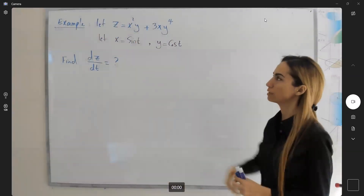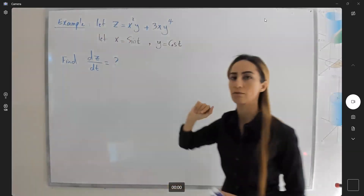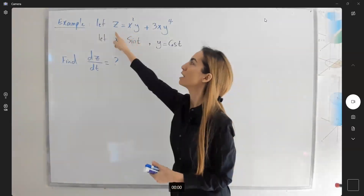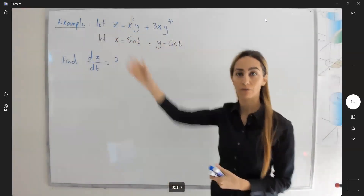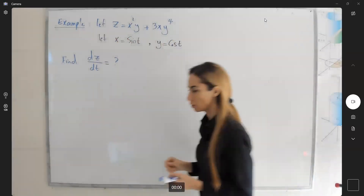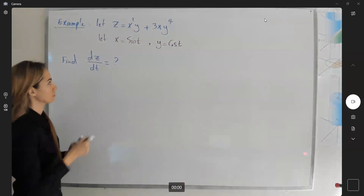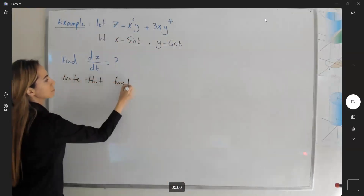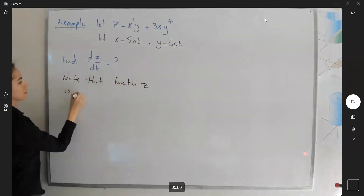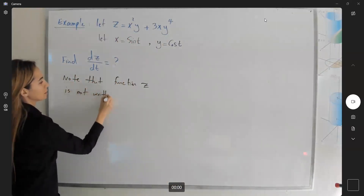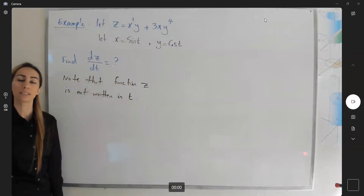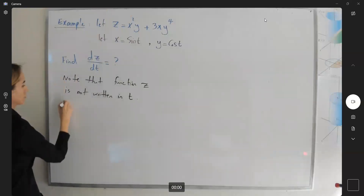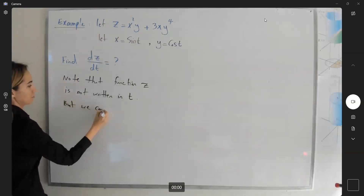When I look at my z function, it's written in x and y — there is no t involved. Can I make some adjustments and write function z in terms of t? Yes. Note that function z is not written in t, but what we can do is use simple substitution to convert everything into t.